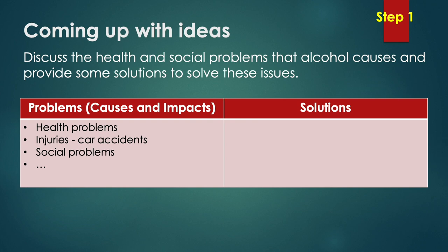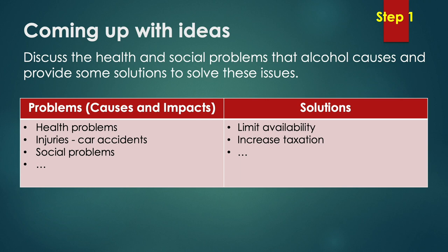Here are some ideas. Under problems: alcohol causes health problems, for example heart disease. When people drink alcohol it can lead to injuries — for example, drunk driving leads to car accidents. It can also lead to social problems; for example, husbands or wives who drink excessive alcohol can become more violent, leading to social issues within the family. Under solutions: alcohol can be limited — for example, in Hong Kong you need to be over 18 to buy alcohol. Taxes can be increased on alcohol, and it can be made more difficult for a restaurant or bar to get an alcohol license. You can add to these points — it's good to have more points than you need. Some can be combined, and some you might decide are not very good and won't be used in your essay.